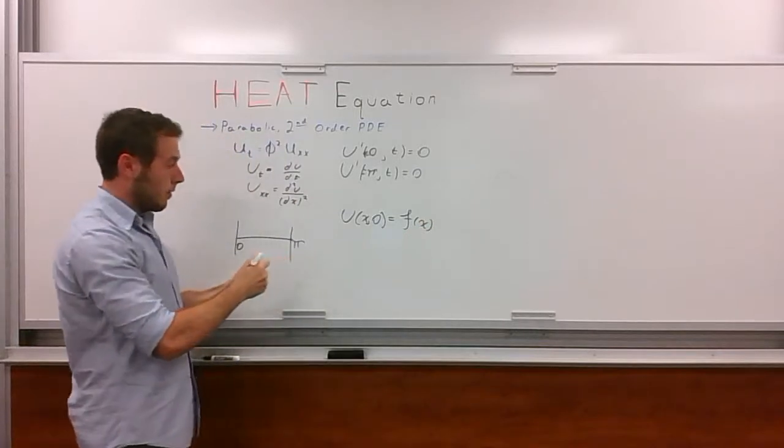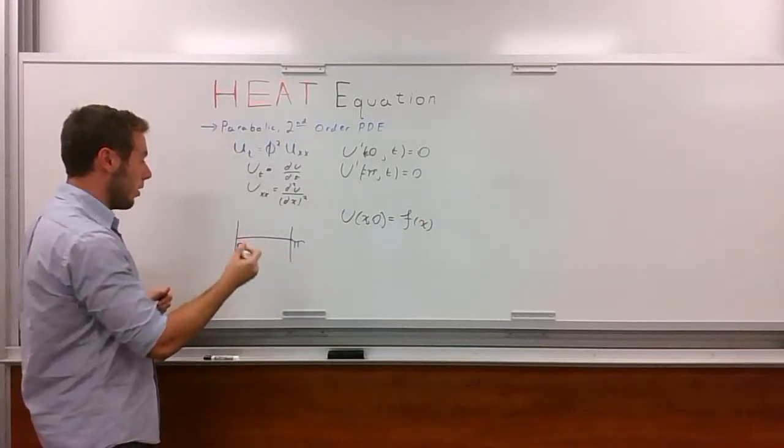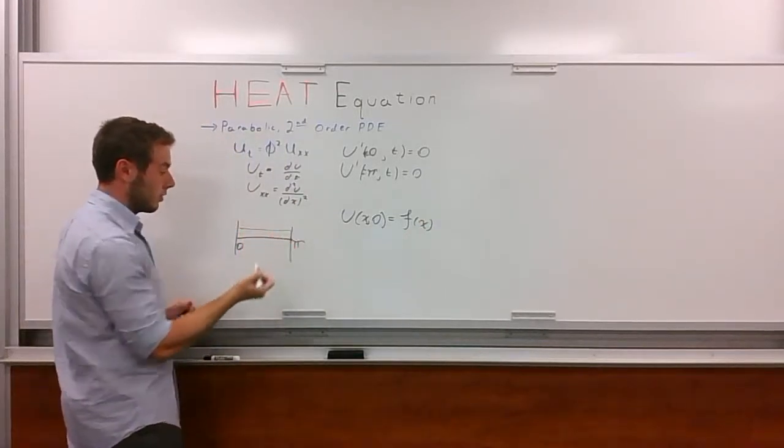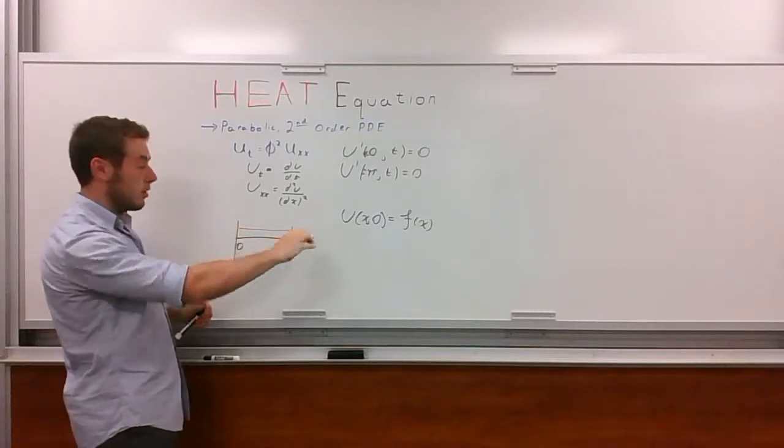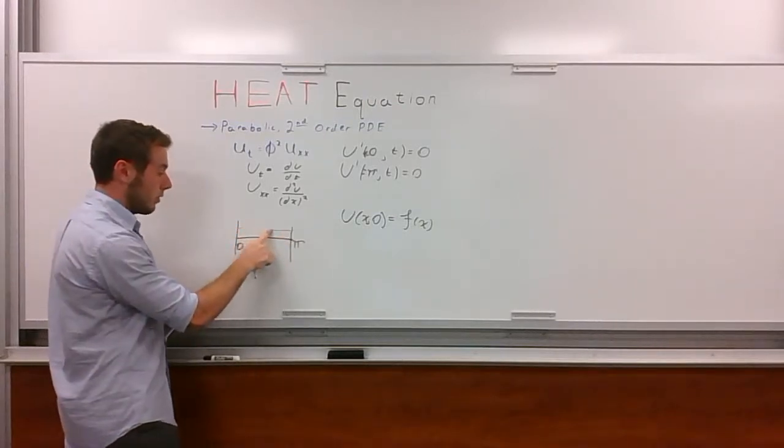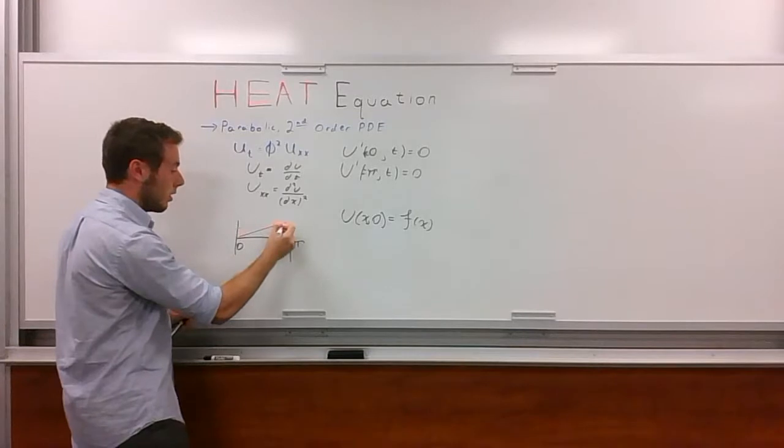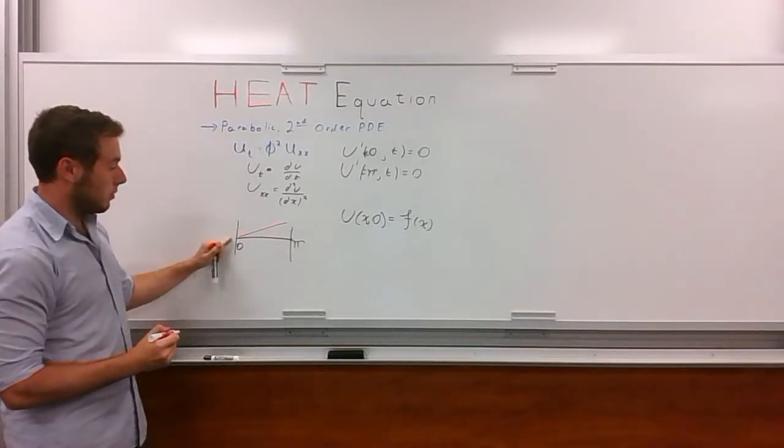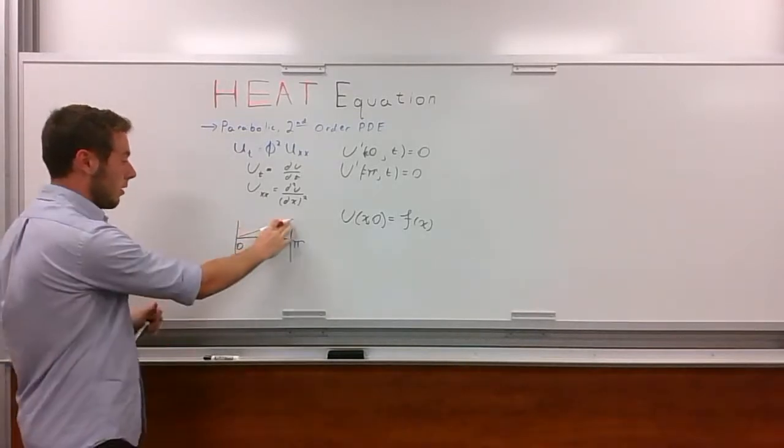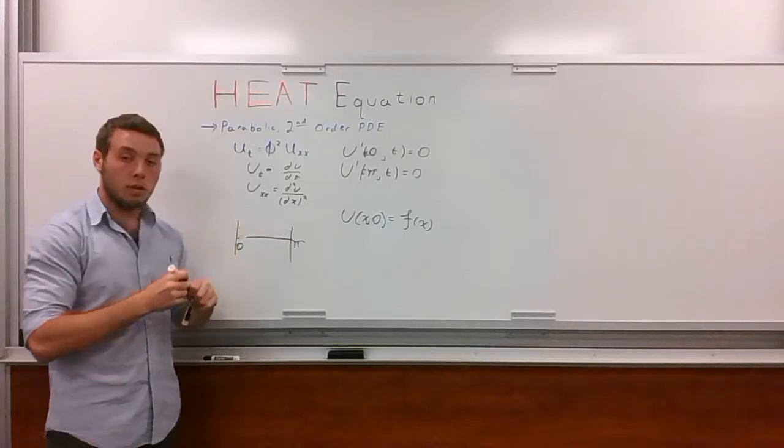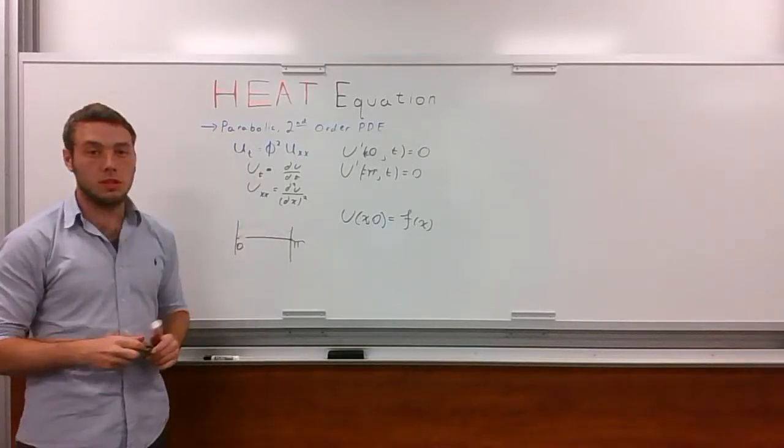For example, if f of x was equal to 1, you'd have a temperature distribution that looks like this: just one constant across the rod. If it was equal to x, then it would go from 0 to pi. Next, we're going to look at how we solve these types of equations with these boundaries.